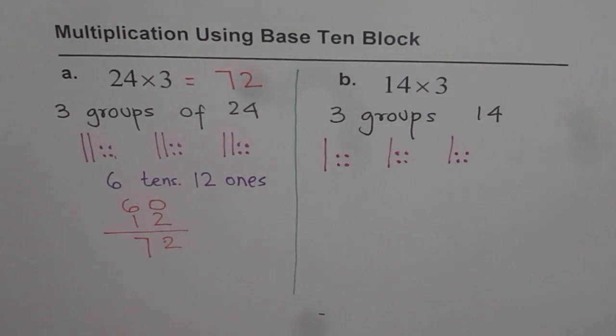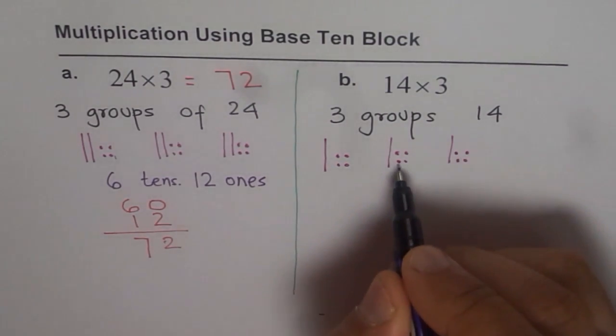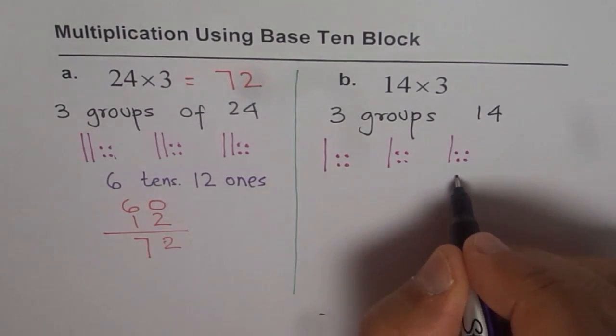So, we have 3 groups of 1 ten and 4 ones. What number is that? Let's count. 1, 2, 3, 4, 5, 6, 7, 8, 9, 10, 11, 12 ones.